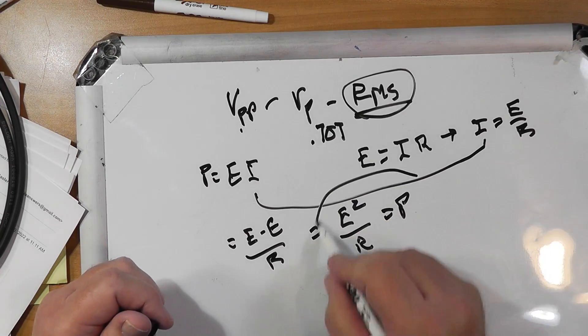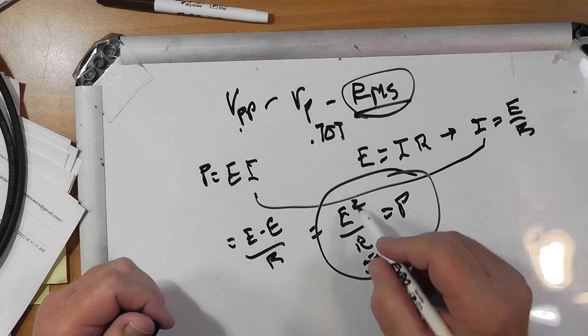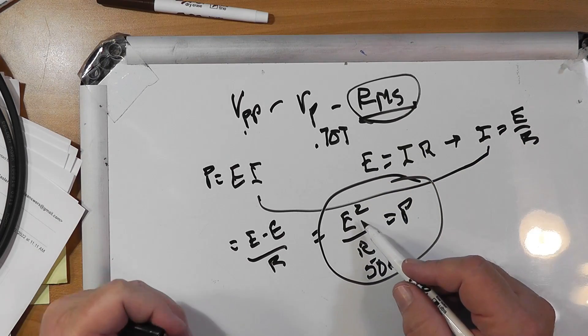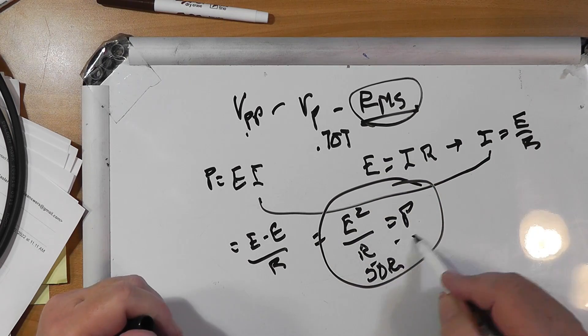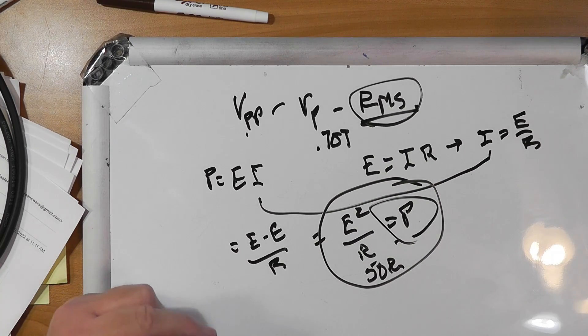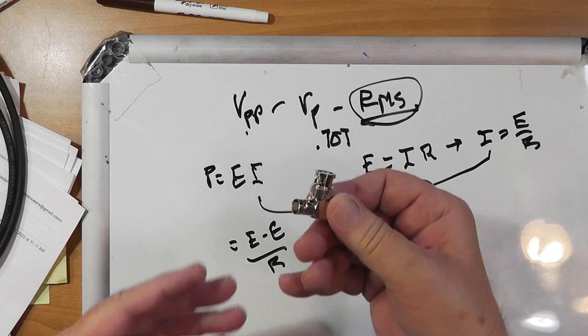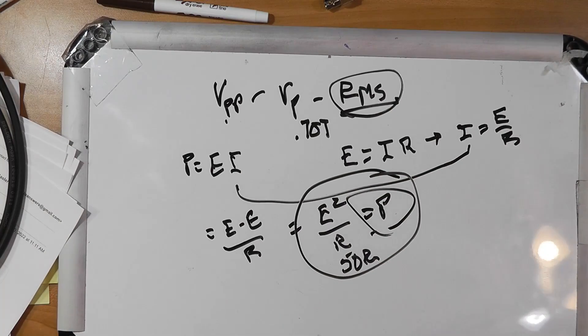Now the thing to note, R is 50 ohms. So you take your RMS voltage, square it, divide it by 50. And that's your power. So that tells you how to use this to determine the power output quite accurately.